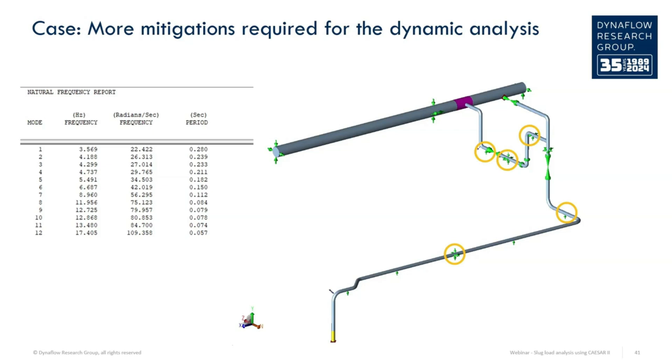Improving the design for the slug loads therefore requires more supporting. An option could be to add a three-way stop in the long horizontal section. This reduces the maximum stress in the system and increases the lowest eigenfrequency. But the system is still not acceptable. There are other locations with low minimum eigenfrequencies which can be improved by adding more supports. Of course, take care to not worsen the static situation of the system by placing supports which displace limitedly due to thermal expansion.